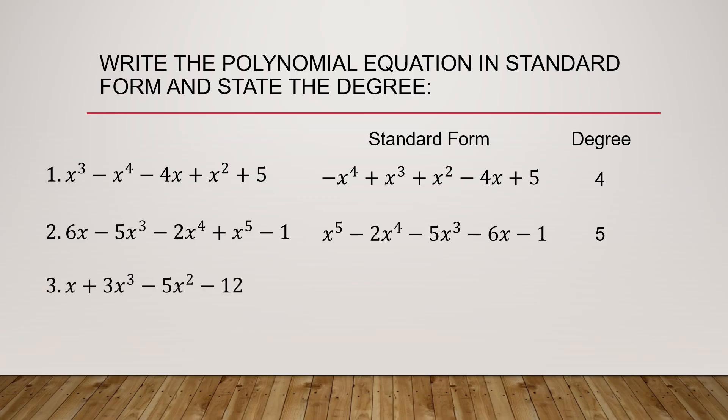For number 3, we have x plus 3x cubed minus 5x squared minus 12. In standard form, it is 3x cubed minus 5x squared plus x minus 12, and the degree is 3.